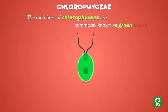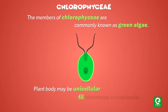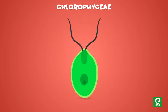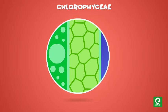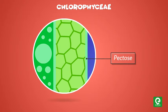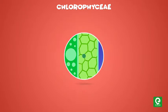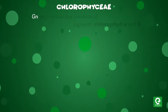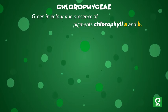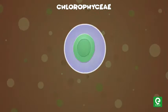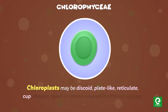Chlorophyceae: The members of Chlorophyceae are commonly known as green algae. Their plant body may be unicellular, filamentous, or colonial. Green algae usually have a rigid cell wall made of an inner layer of cellulose and an outer pectose layer. They are mostly grass-green in color due to the presence of pigments chlorophyll a and b.